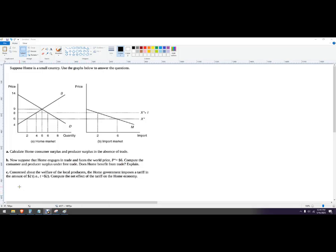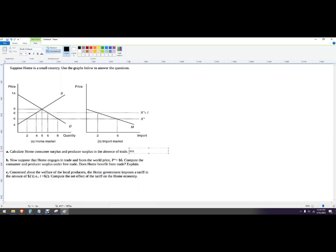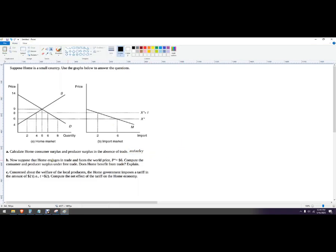Hello out there to you. In this problem, we're going to solve a small country trade graph with a tariff and without a tariff and under what's called autarky. So you'll see this word here where it says absence of trade. The economics word for that is autarky. It just means independent or not trading with the rest of the world. So they said calculate consumer surplus and producer surplus in the absence of trade.